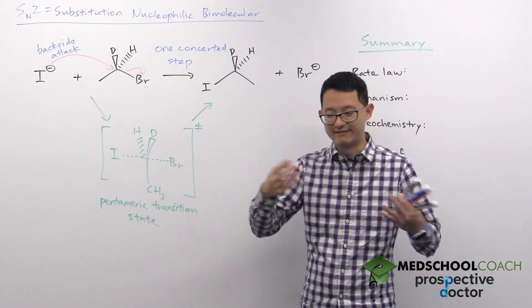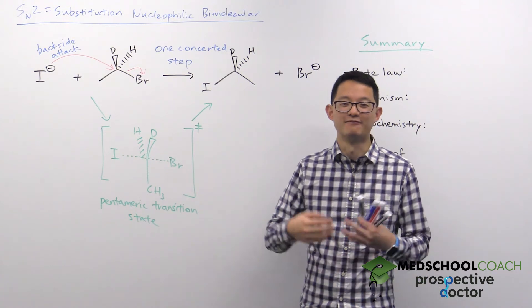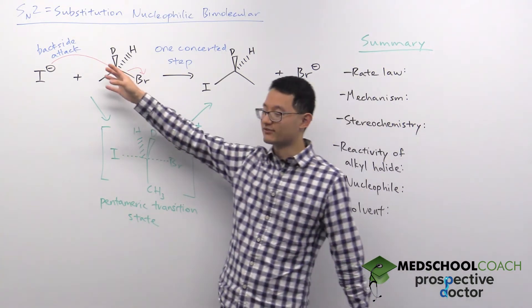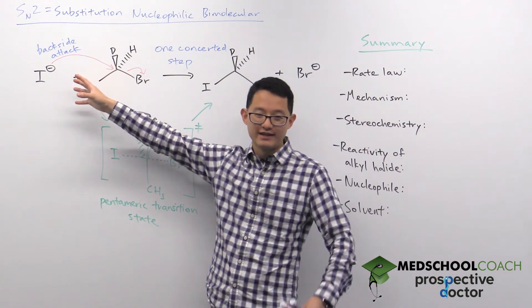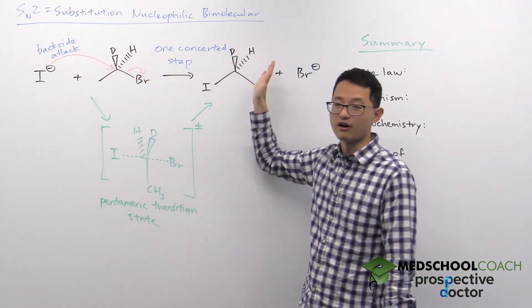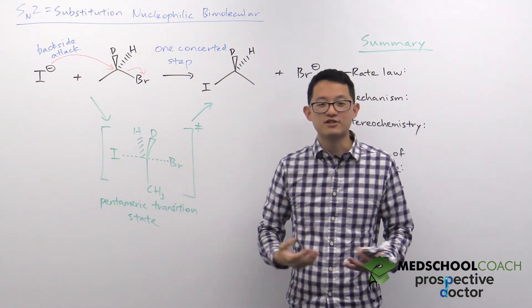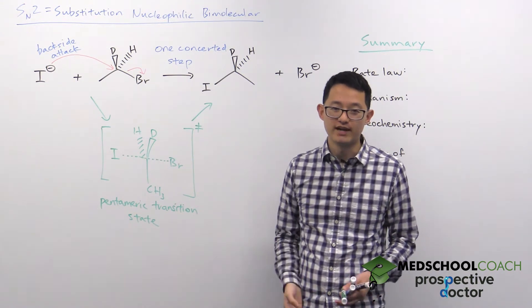So in many ways, you can think of this almost like an umbrella when the weather is really bad and the wind is very strong. Your umbrella is facing one direction, but then you have a gust of wind and it inverts your umbrella. That's essentially what's going on here with the SN2 reaction.